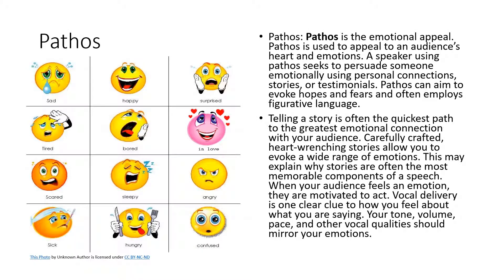Remember, logos is the word — it is logical appeals. The argument you make needs to be sound, logical, and supported with evidence and reasoning. Moving on to pathos: I have all these emojis on the slide, which helps you think about how to use emotional appeals in your speech. Pathos is used to appeal to an audience's heart and emotions. You do this by establishing personal connections through stories and testimonials. Pathos can aim to evoke hopes and fears, and it often employs figurative language or very descriptive, vivid language.